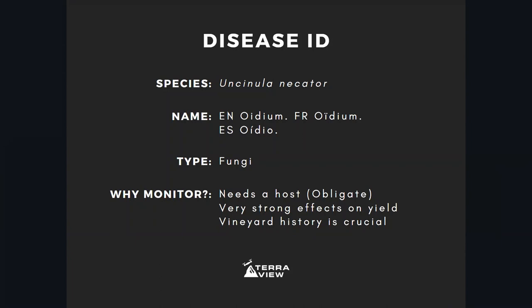The impacts on yield are the biggest — the strongest compared to any losses caused by other pathogens, as we're going to see later in this presentation. It's also very dangerous because vineyard history is crucial. If your vineyard already had powdery mildew, there's a high probability that the pathogen might still be in your vines. Your grapevine tissue might already be a source of inoculum, and that's basically a disaster waiting to happen.